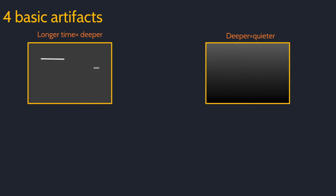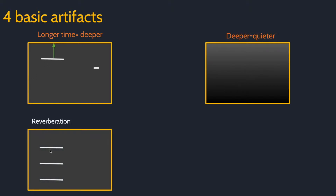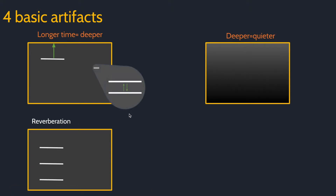Now that we roughly know how the computer makes an image and how to describe it, let's look at four basic artifacts based on the assumptions we discussed earlier. There are many more artifacts you need to know, but these are the most useful in daily practice. First, remember that the computer interprets longer time as deeper. If we have a hyperechoic object, the sound waves may reflect off that object, return to the transducer, reflect off the transducer, and return to the object, and so on — it bounces back and forth. Because the computer interprets time as distance, it will make this picture. This is called a reverberation artifact. A similar process can happen on a smaller scale and will result in a tapered series of lines called a comet tail artifact.